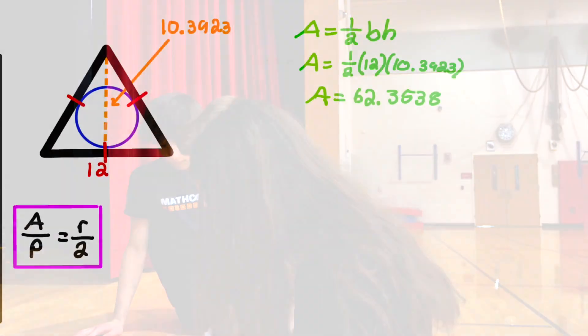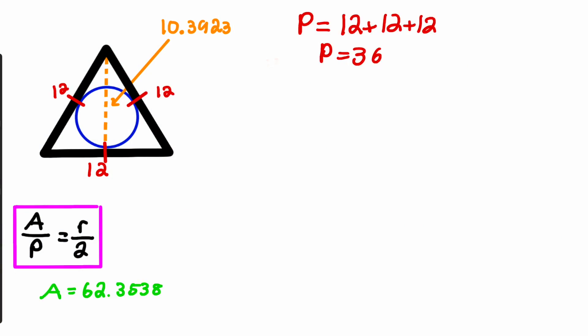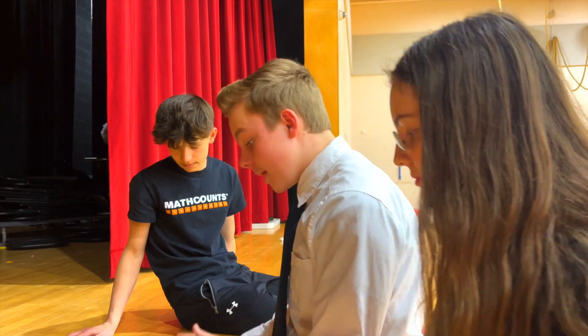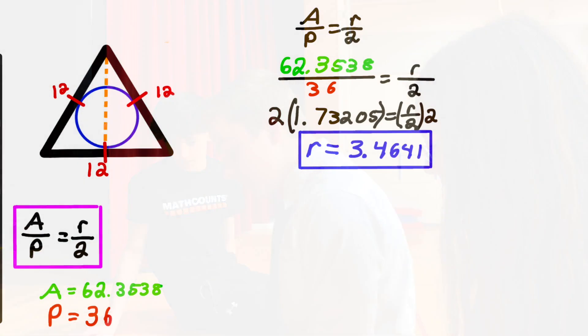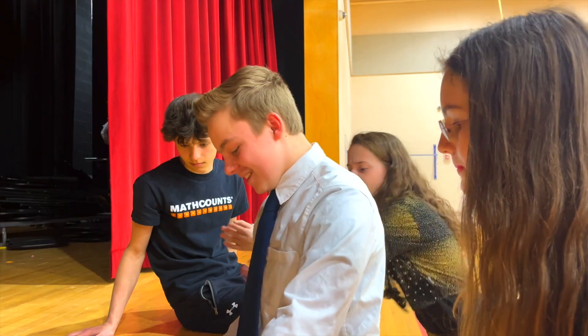After we simplify the exponents, subtract, and take the square root, we get altitude equals about 10.3923 units. To find the area, we must do one-half base times altitude, to get 62.3538 square units. To find the perimeter, we add all side lengths: 12 plus 12 plus 12 is 36. Now we plug into the equation: area divided by perimeter equals radius divided by two. After simplifying, we find the radius is 3.4641. Since the diameter is twice the radius, we multiply by two: 3.4641 times two.